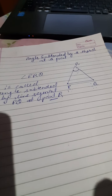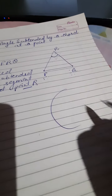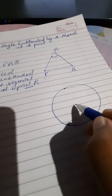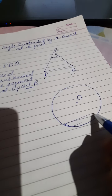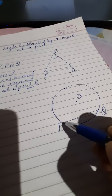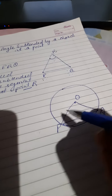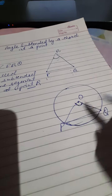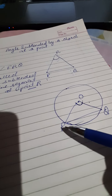Now we will take this relationship with the circle and a chord. Suppose we have a circle having center O and we have a chord PQ. At the center, the chord PQ is subtending angle POQ.